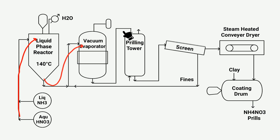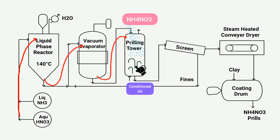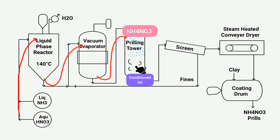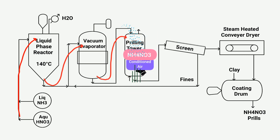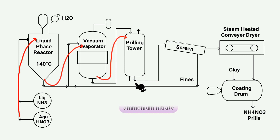To transform the solid ammonium nitrate into granulated form, it is subsequently conveyed to the prilling tower. Ammonium nitrate is sprayed from the top section of the prilling tower, which has a height ranging from 60 to 75 meters. As it descends, surface tension causes it to assume a round shape. Conditioned air is introduced from the bottom section; as the descending ammonium nitrate contacts the air, its temperature decreases and the moisture — around five percent water — is removed. This process results in the formation of round solid grains of ammonium nitrate.